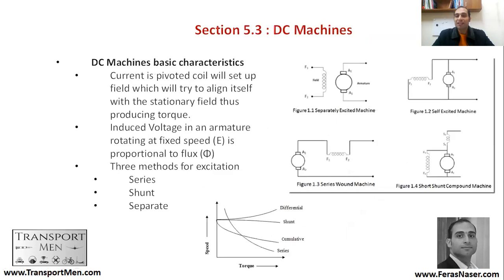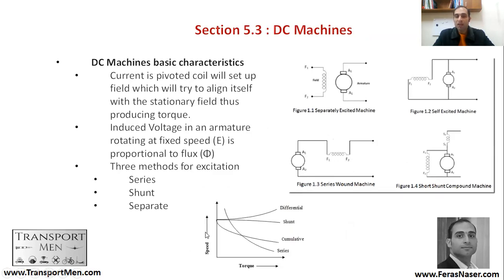DC machines are different from AC machines — the armature is excited in different ways. There are three ways for DC machine armature excitation: separately excited (not common), self-excited, series-excited, and shunt-excited. These result in different speed-torque relationships. You need to know the different relations that result in torque performance — whether differential-excited, shunt-excited, cumulative-excited, or series-excited.